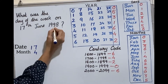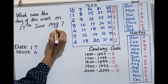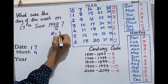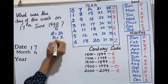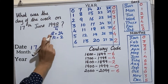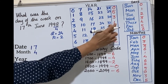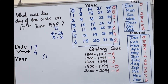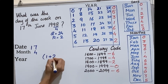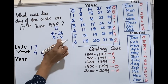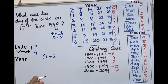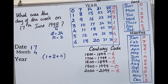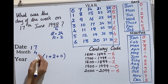The year is 1998. Take the last 2 digits (98) and divide by 4: the quotient is 24 and the remainder is 2. For quotient 24 the code is 1. So for the year: code 1 plus remainder 2, plus the century code. The century code for 1998 is 0.